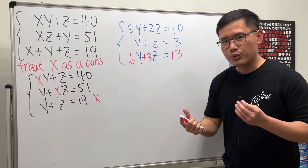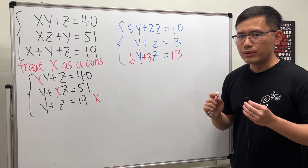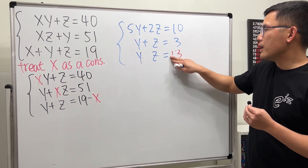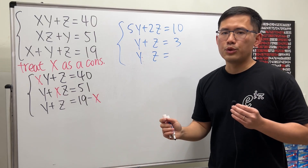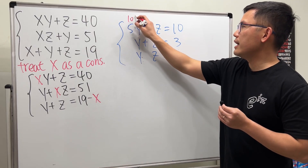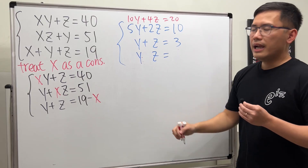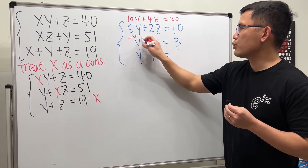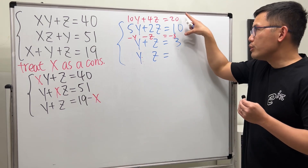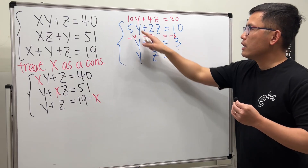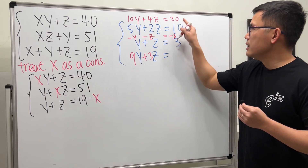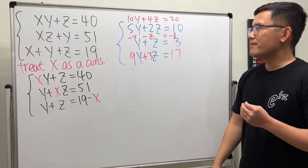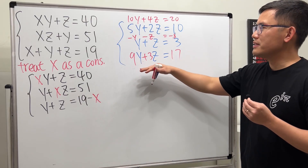In general, for such a system to have a solution, you just need one of the equations to be a linear combination of the other two. For example, take the first equation and multiply by 2 to get 10y + 4z = 20, then take another and multiply by −1 to get −y − z = −3. Combining them gives 9y + 3z = 17, and this system will still have a solution.